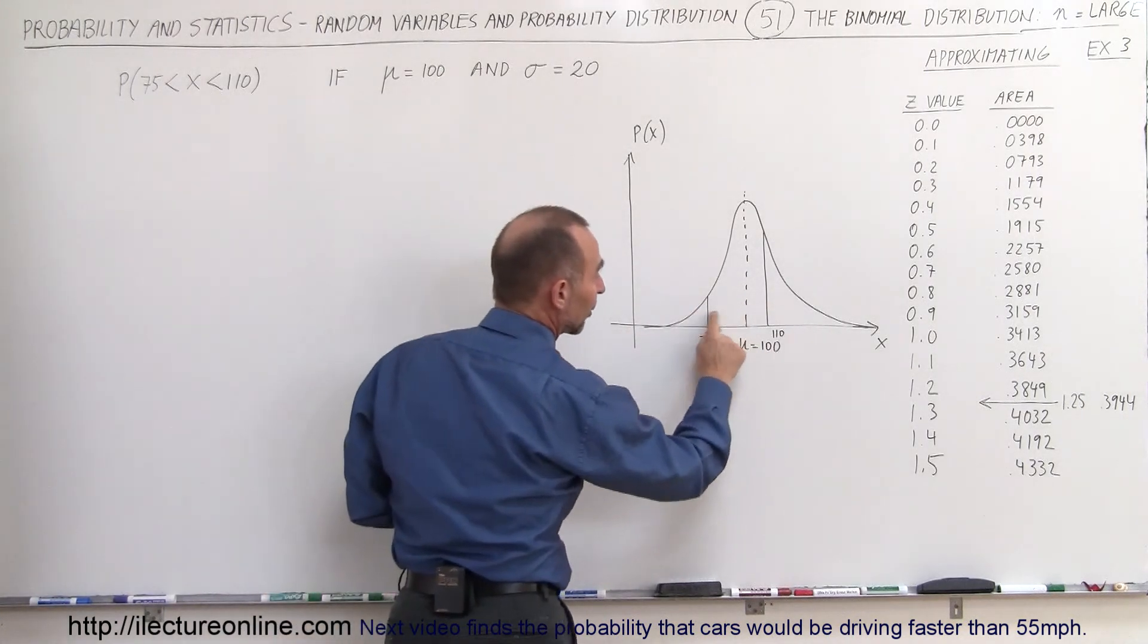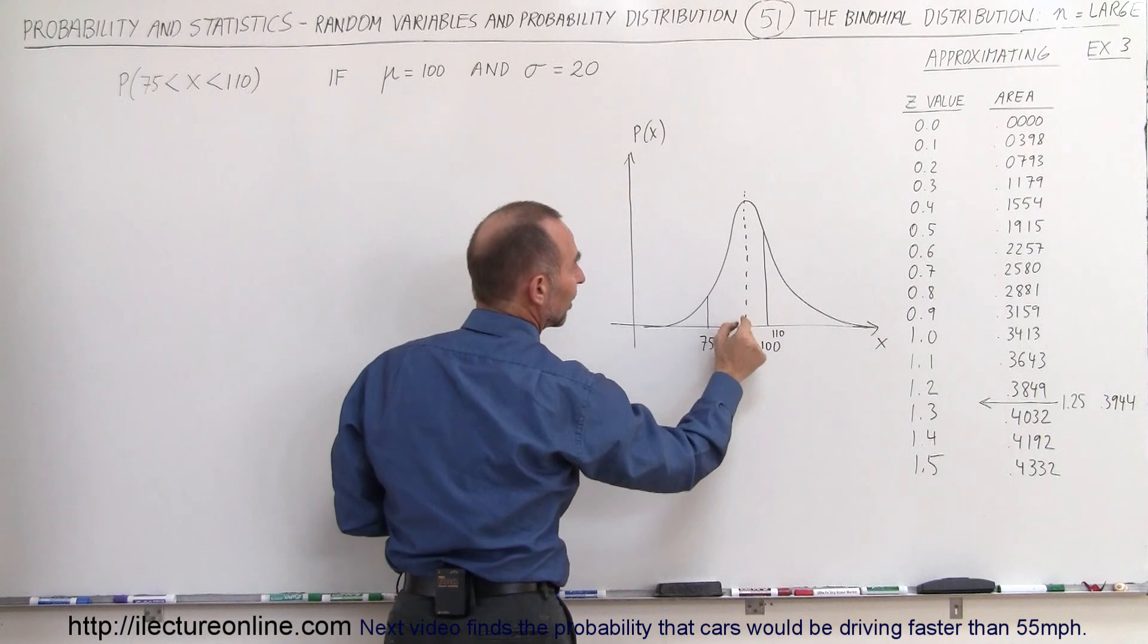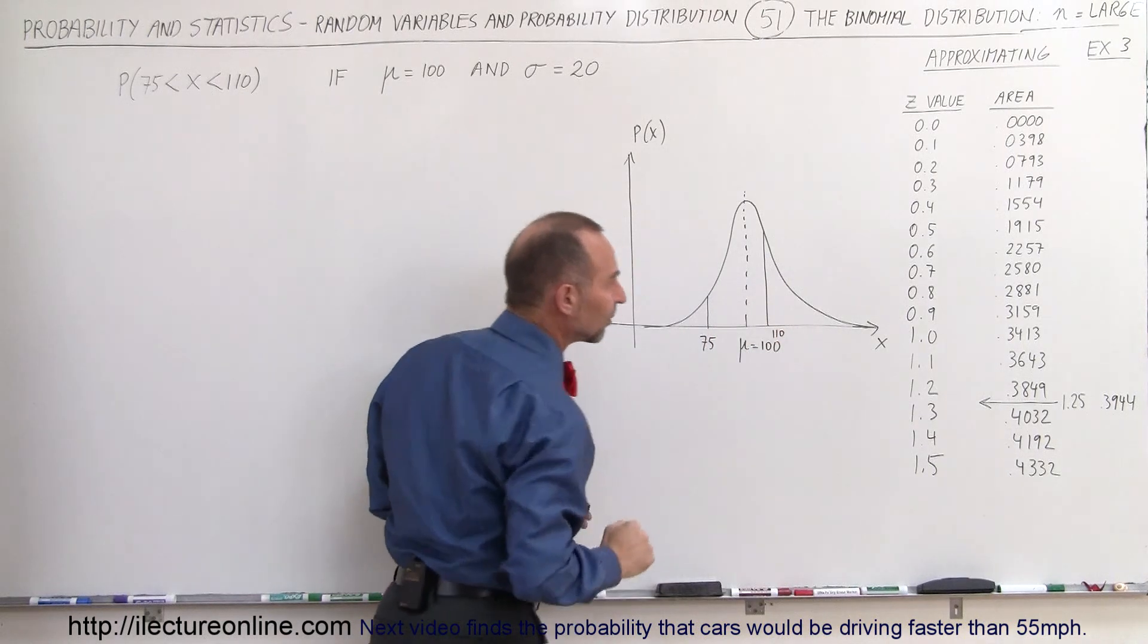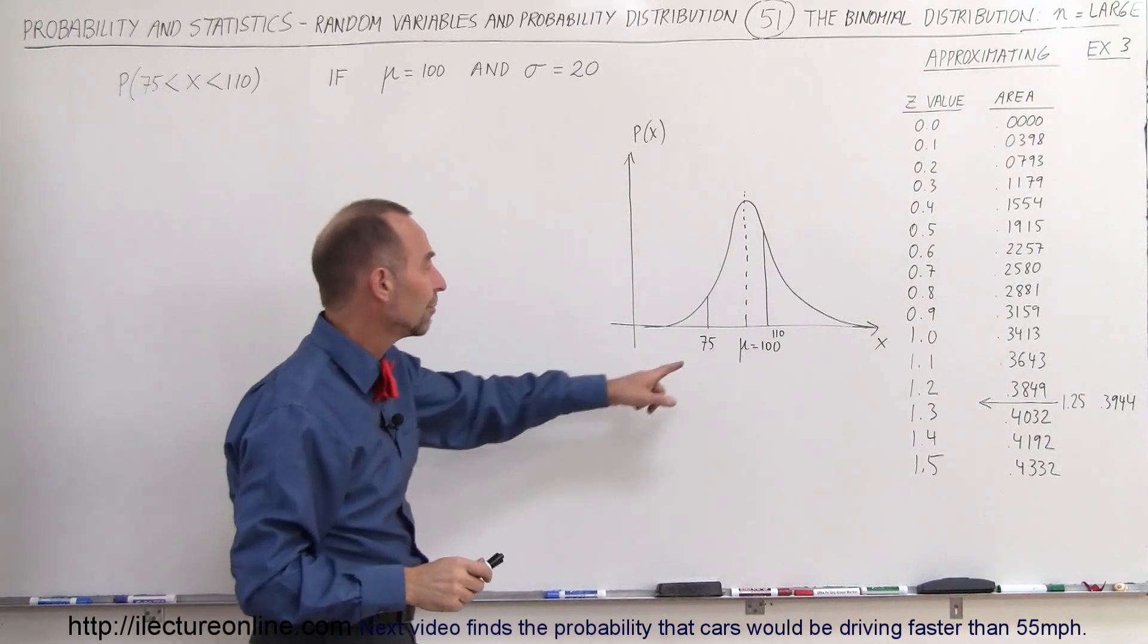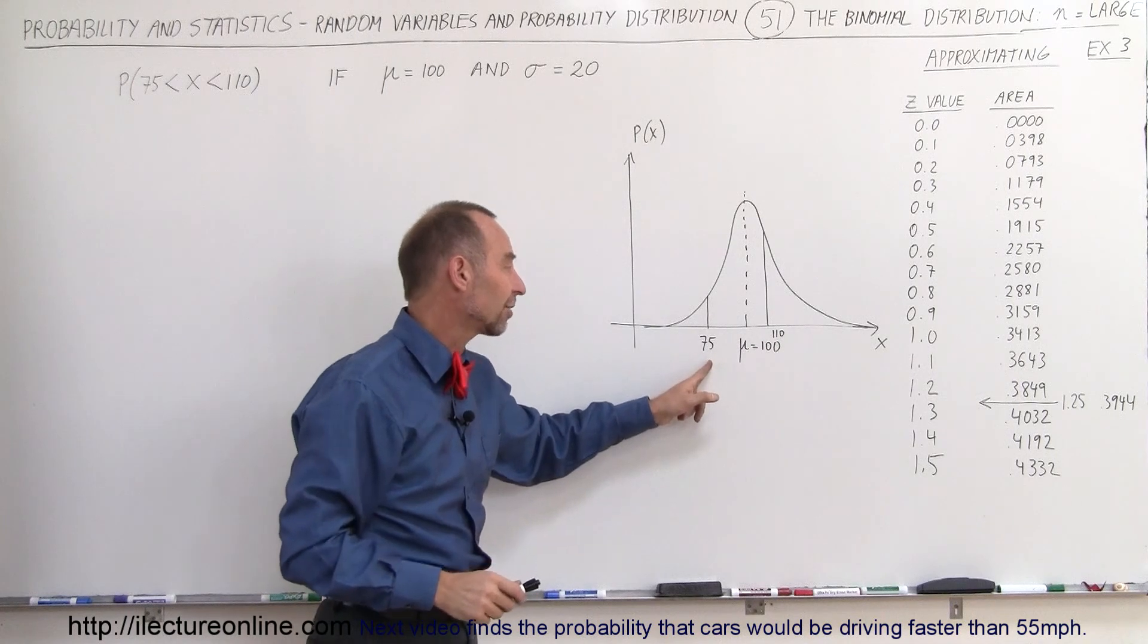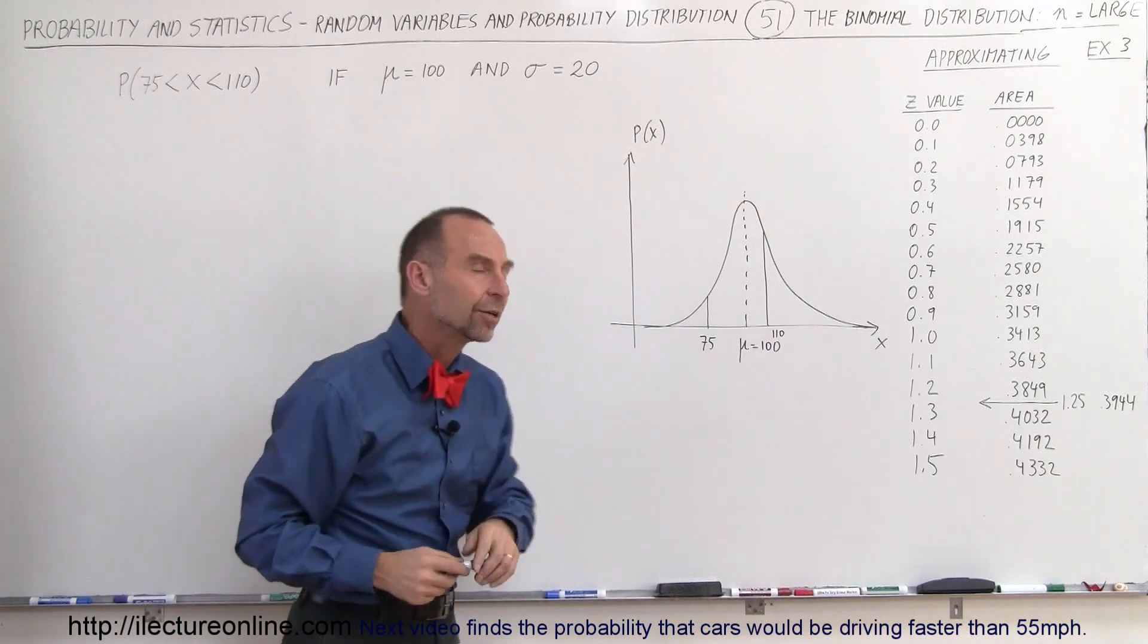The best way to do that is to find this area right here to the left of the center and this area right here to the right of the center. And so in order to do that, we need to find the corresponding z values for x equals 75 and for x equals 110.